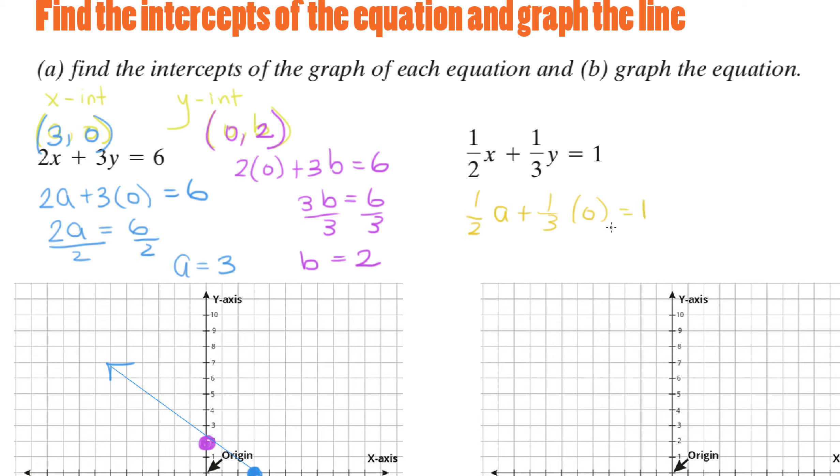Now, different from the previous example where we divided, here I don't want you to divide. I want you to multiply by the reciprocal of one half on both sides. What is the reciprocal? 2 over 1. Therefore, a equals, well what's 1 times 2 over 1? It's 2. So my x-intercept is (2, 0).